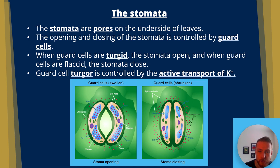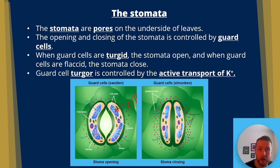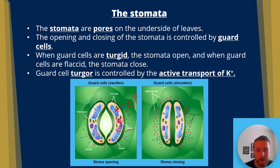The red potassium ions on the outside of the leaf get actively transported into the guard cells — a process that uses ATP because it's active and against the concentration gradient. That lowers the water potential inside the guard cells. Osmosis is the movement of water from high to low water potential across a membrane, so water moves into the guard cells, increasing turgidity and opening the stomata.